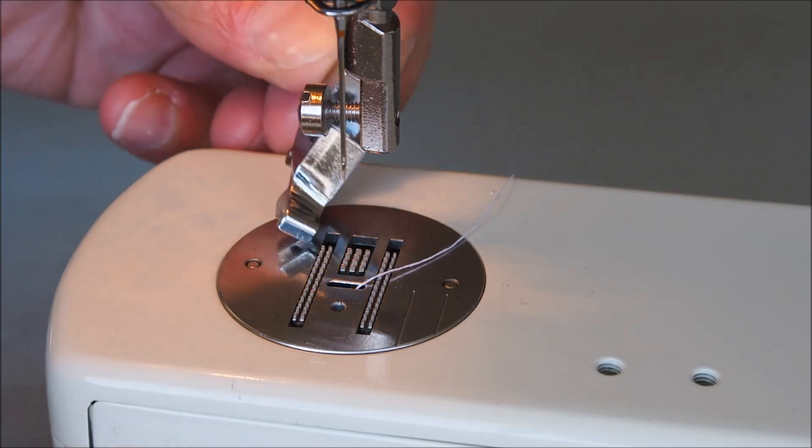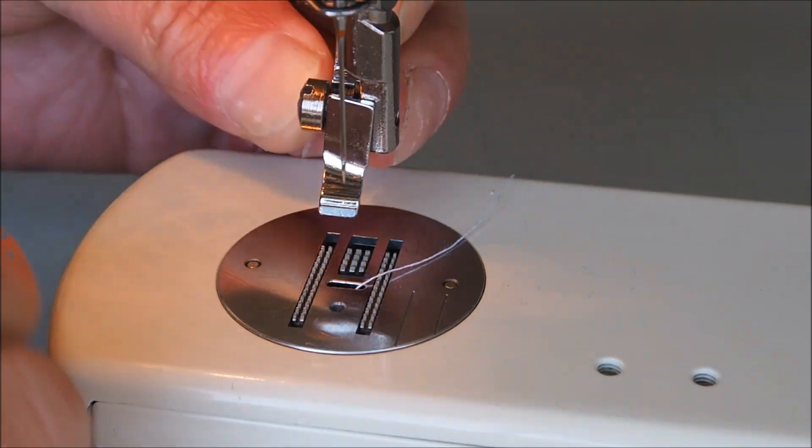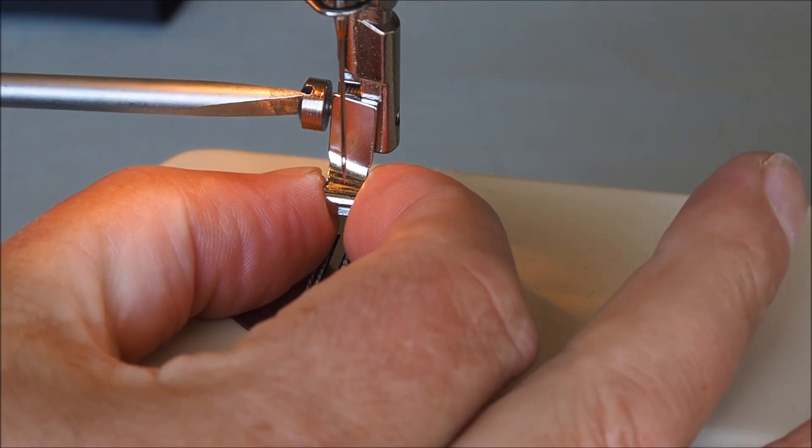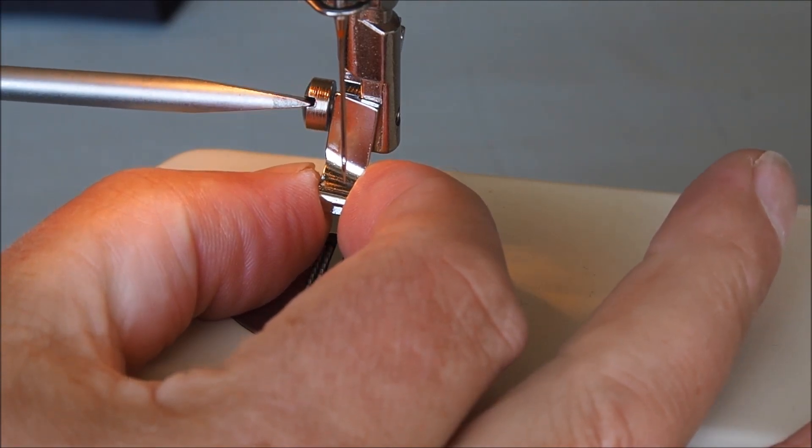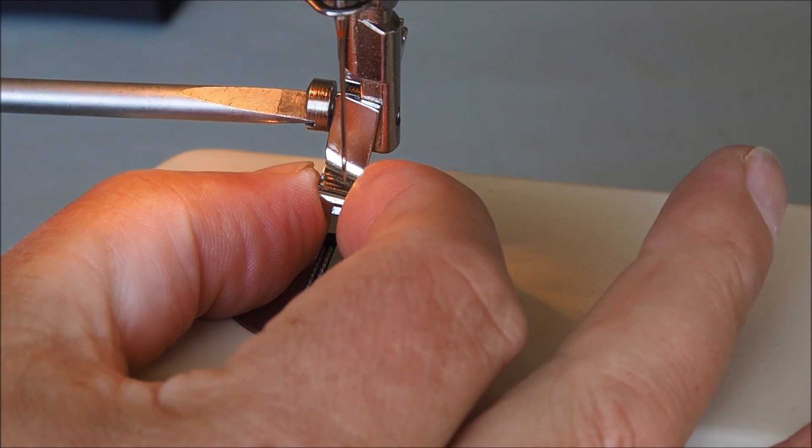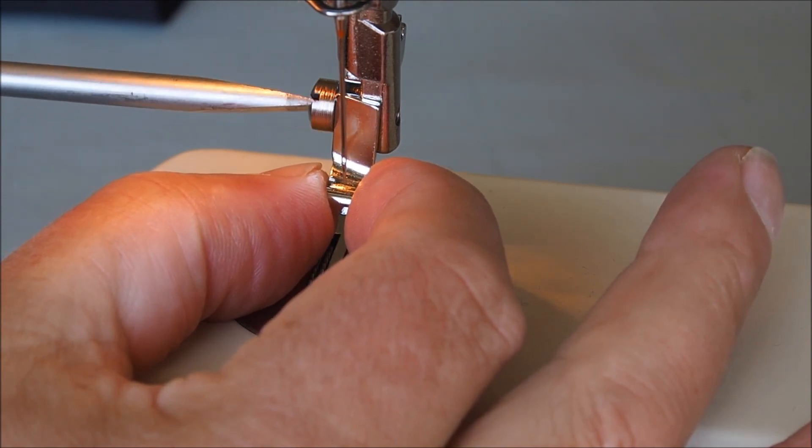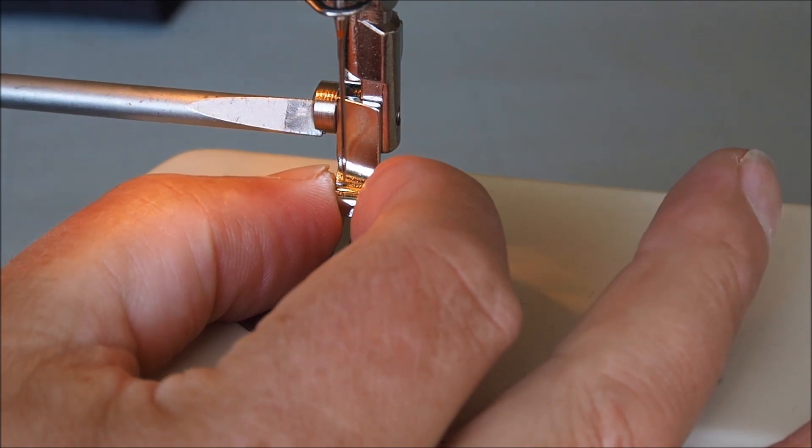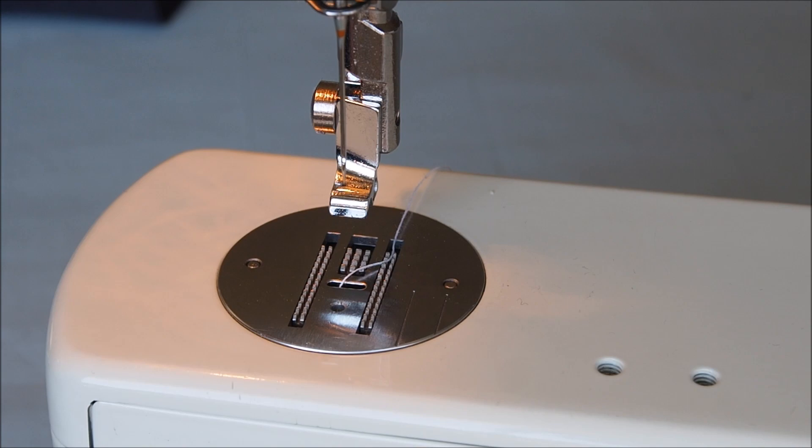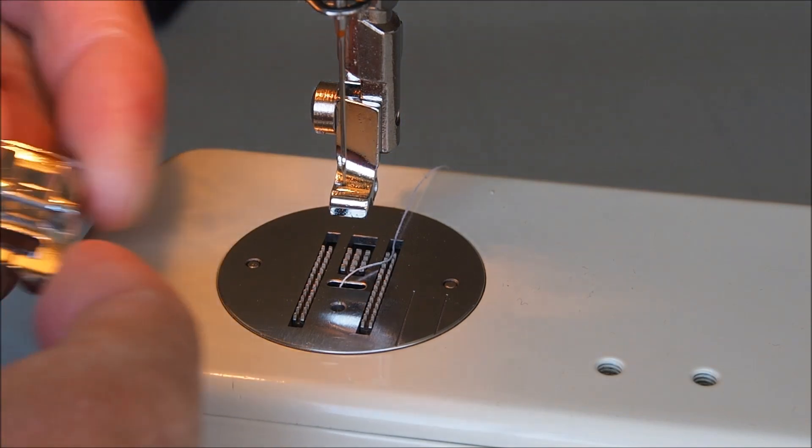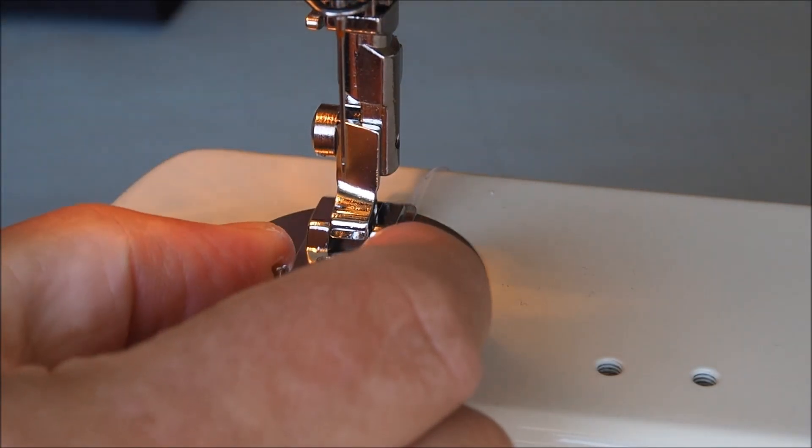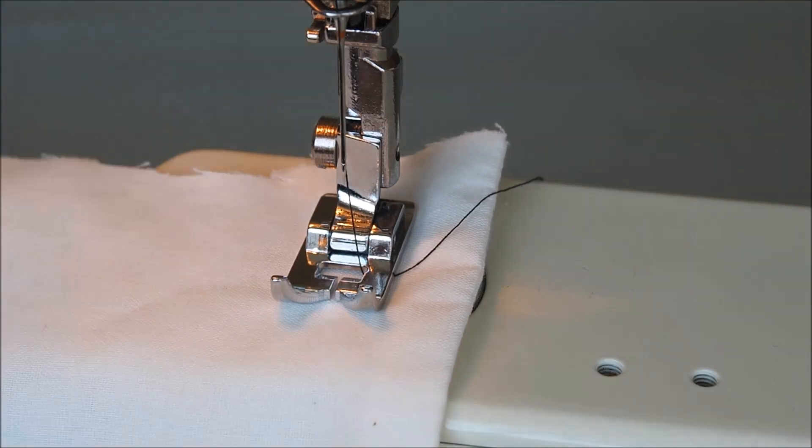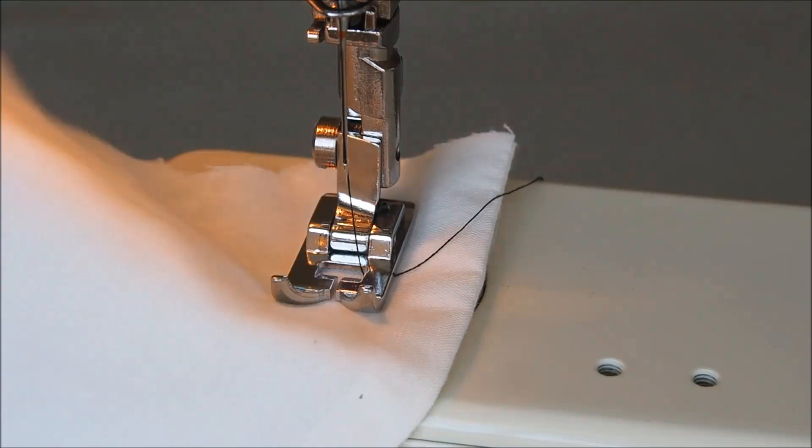I'll just attach the snap on type shank there. Now this would work for most of the 800 series Berninas, the older Berninas, likes of the 801, 807, 810 and the likes. We'll just put a standard foot, standard type foot on there. Okay, let's go on to zigzag there.